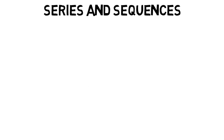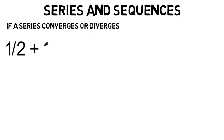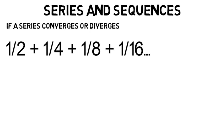The next part of Calculus 2 is series and sequences, mostly finding if a series converges or diverges. As in, if you have a series like one-half plus one-fourth plus one-eighth plus one-sixteenth and went on forever, it would get infinitely close to one. This means that this series converges to one.